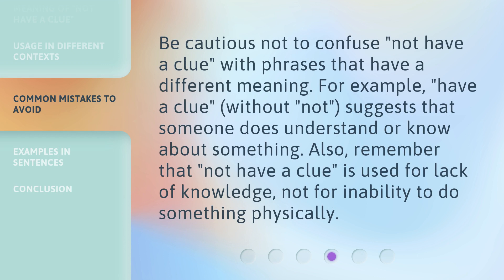Be cautious not to confuse 'not have a clue' with phrases that have a different meaning. For example, 'have a clue' — without 'not' — suggests that someone does understand or know about something. Also, remember that 'not have a clue' is used for lack of knowledge, not for inability to do something physically.